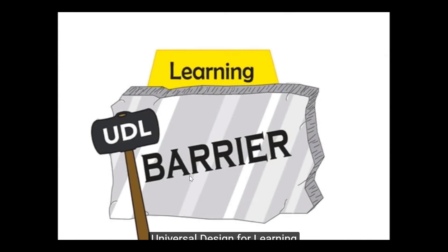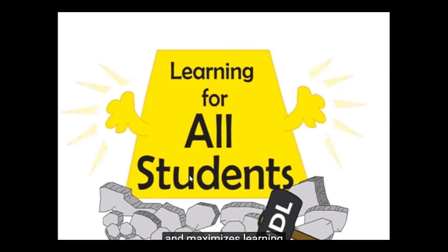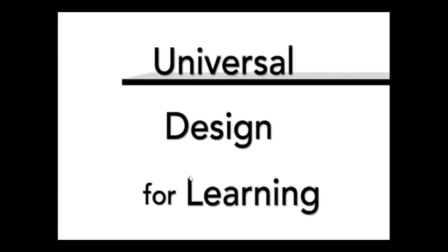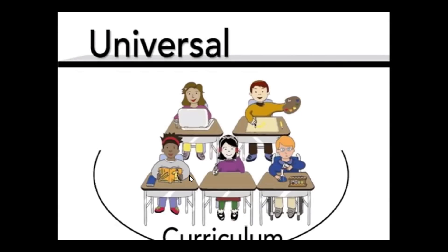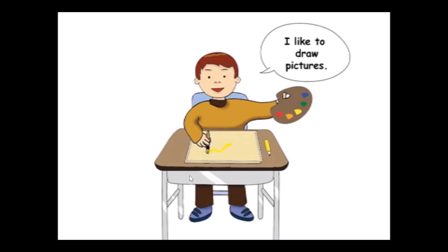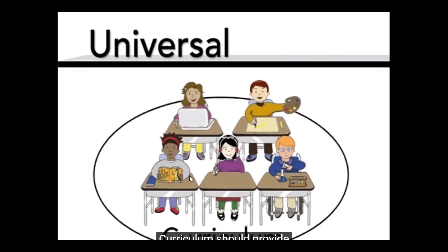Universal Design for Learning is an approach to curriculum that minimizes barriers and maximizes learning for all students. Let's unpack the term. By universal, we mean curriculum that can be used and understood by everyone. Each learner in a classroom brings her own background, strengths, needs, and interests. Curriculum should provide genuine learning opportunities for each and every student.